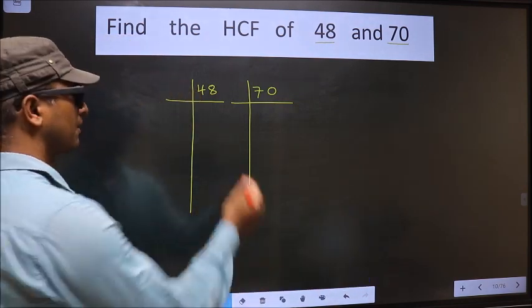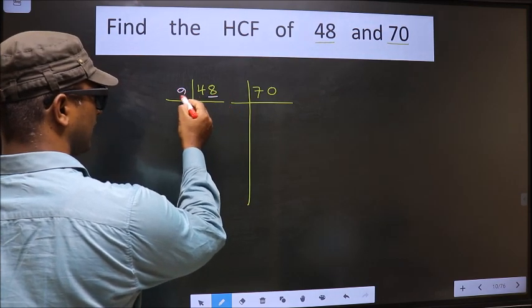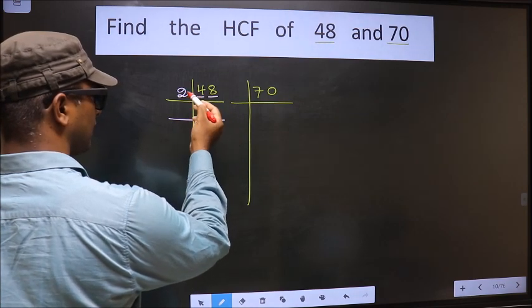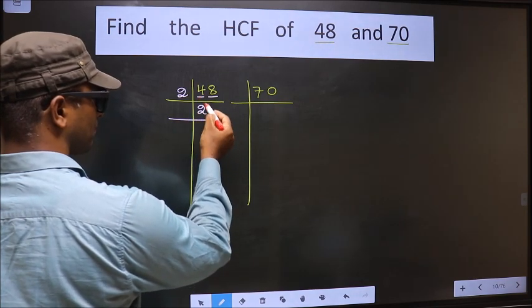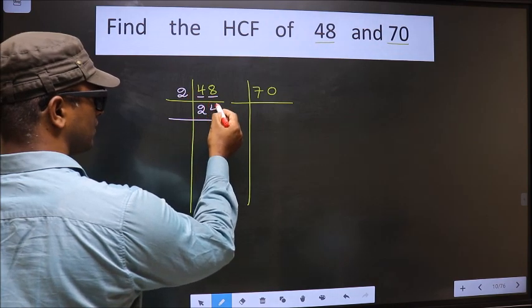Next. For this number, last digit 8, even, so we take 2 here. The first number, 4. When do we get 4 in 2 table? 2 times 2 is 4. The other number, 8. When do we get 8 in 2 table? 2 times 4 is 8.